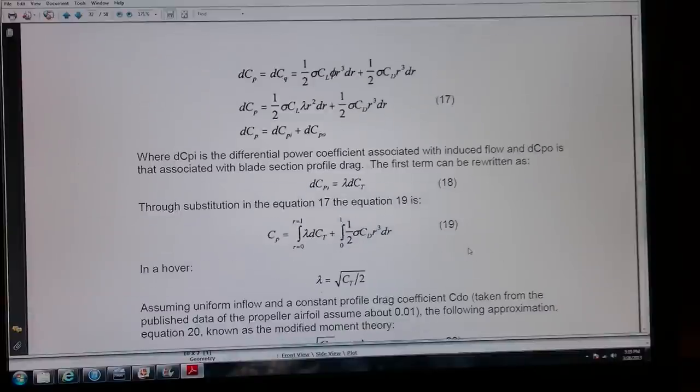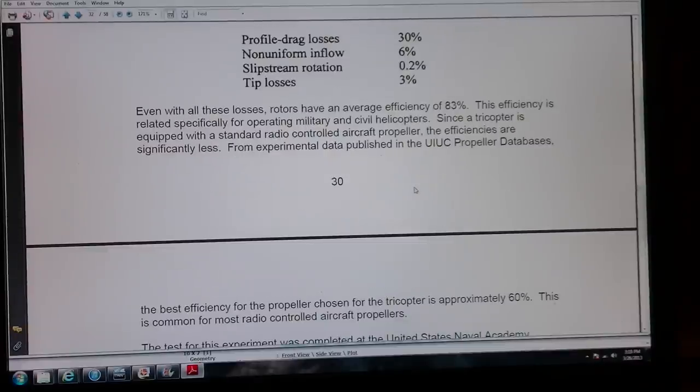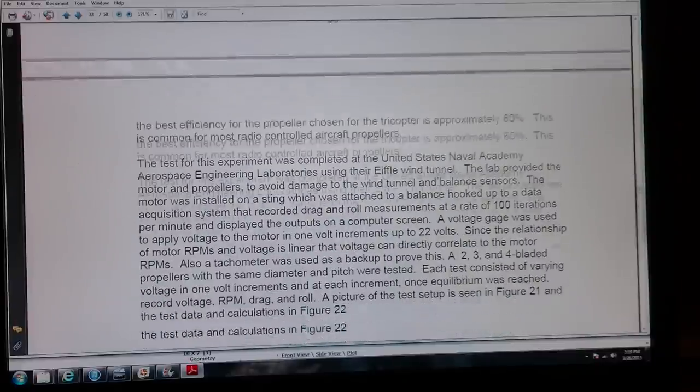We come up with a modified momentum theory which gives us an empirical value of K, which is basically our loss values. The losses you have are about 30% due to profile drag, 6% to non-uniform flow, slipstream rotation about 0.2, and tip loss is 3. So your average real operating propeller is typically about 83 for a model RC airplane. Their propellers are significantly less. You're talking about a really good propeller if you can get it up to 60, but typically it's far less than that.